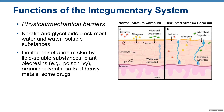You have a protein in your skin called keratin and glycolipids that block most water and water-soluble substances, so those substances cannot enter your body. At the same time, water cannot easily leave your body, which protects you from dehydration. You have limited penetration of skin by lipid-soluble substances, some organic solvents, salts or heavy metals, and some drugs.